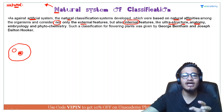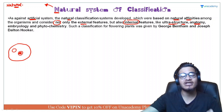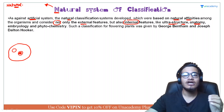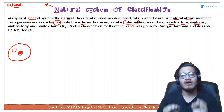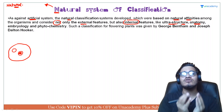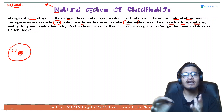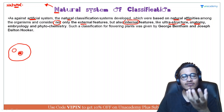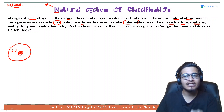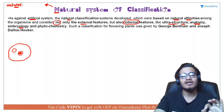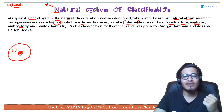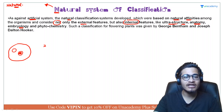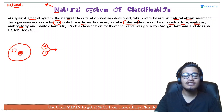Iske saath saath anatomy dekhne ko kaha gaya — yani jab aap dicot aur monocot ki internal organization dekhenge to aapko pata lagega ki dicot aur monocot bahut different hote hain. Aur jab aap internal structure dekhenge to pata lagega ki saare dicots mein kuch fundamental similarities hain, saare monocots mein kuch fundamental similarities hain — jo unhe correct categories mein bifurcate karne mein help karti hain. Embryology is very important — dicot mein do cotyledons honge, monocot mein ek cotyledon hoga — yeh saari cheezein alag-alag categories mein put karne mein help karti hain.